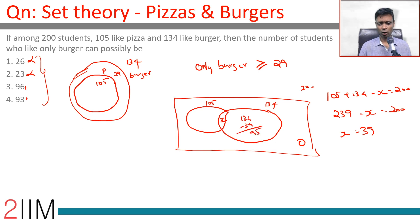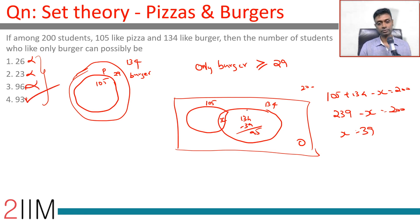It cannot be any more than 95. So the answer is: only burger is greater than or equal to 29 and less than or equal to 95.